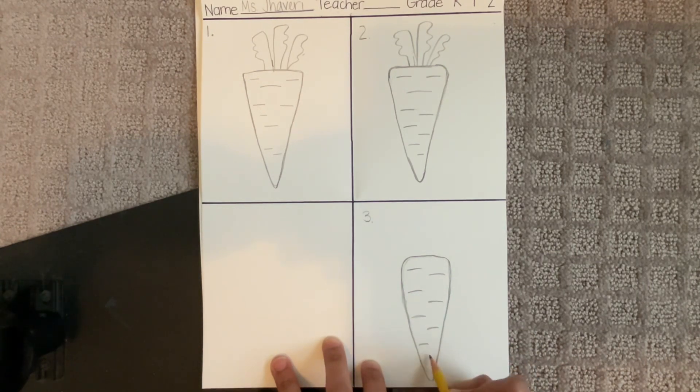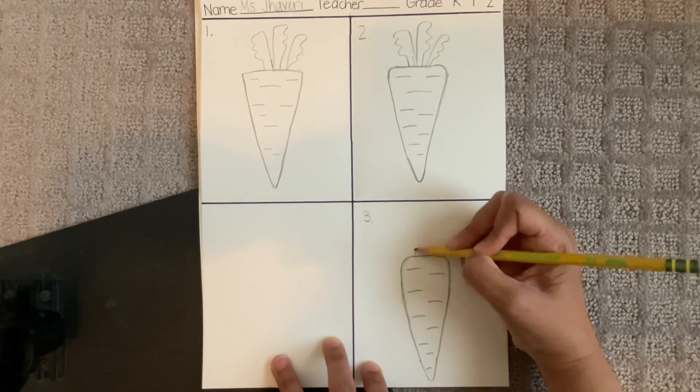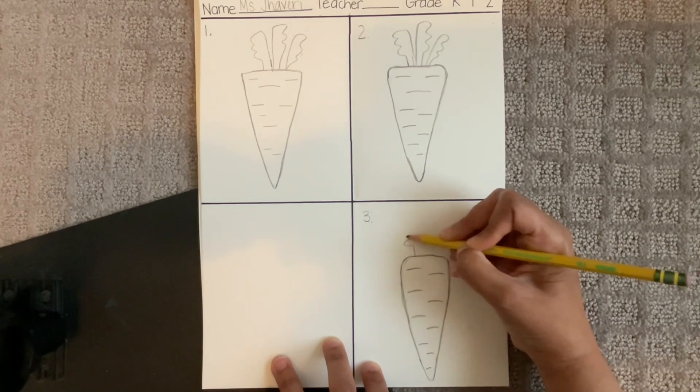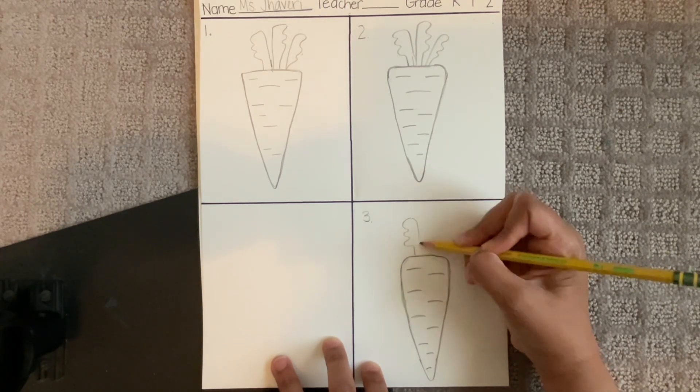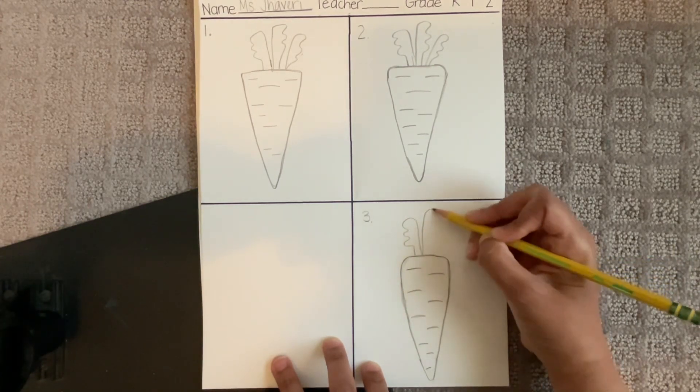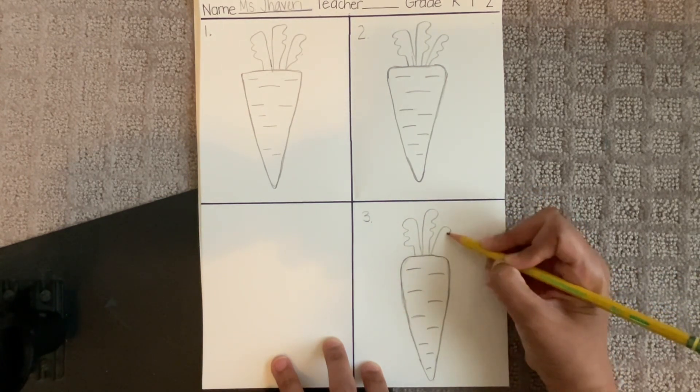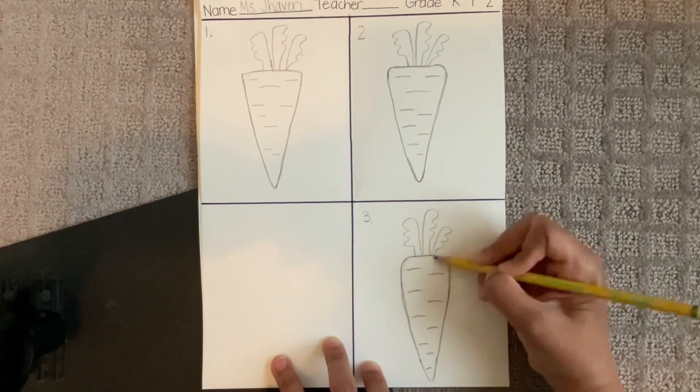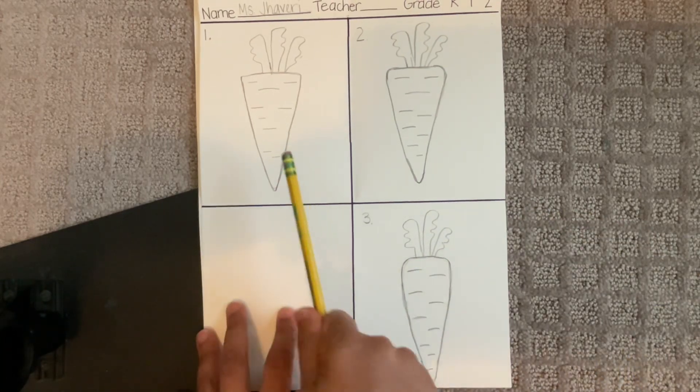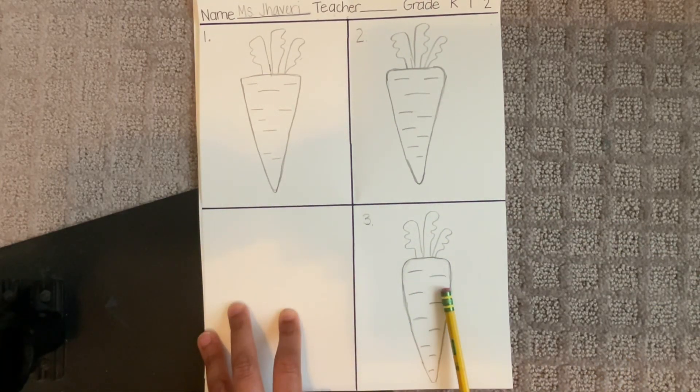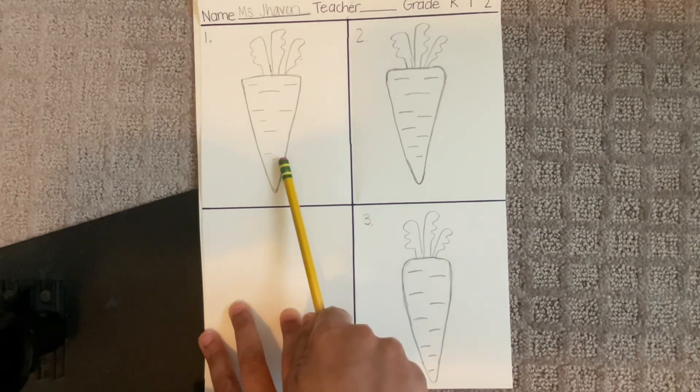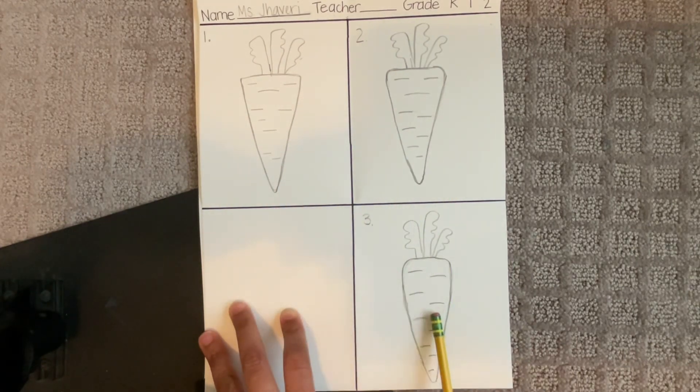And one, two, three. One, two, three. One, two, three. Just look at how far you've come from drawing number one to drawing number two to drawing number three. Okay? We're going to do this one more time.